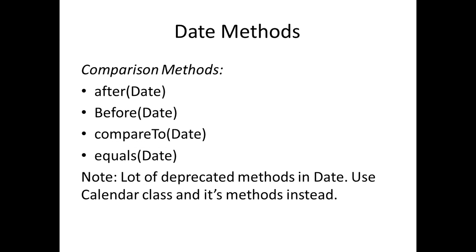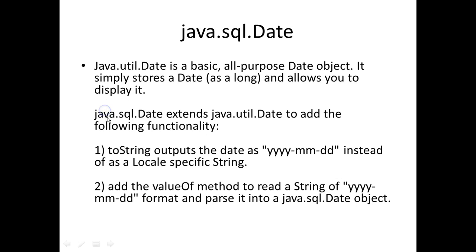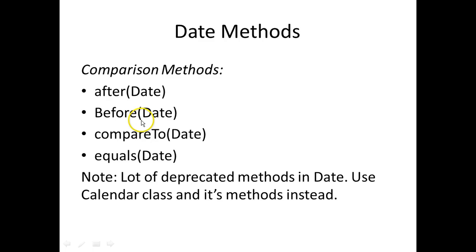In Java there are a lot of useful methods to compare two dates. You have methods like after, before, compareTo, and equals. If you want to find out whether a given date is after another date, you invoke the after method. Similarly, to check whether a date is before another date, you invoke the before method, and you can use compareTo to compare two dates.